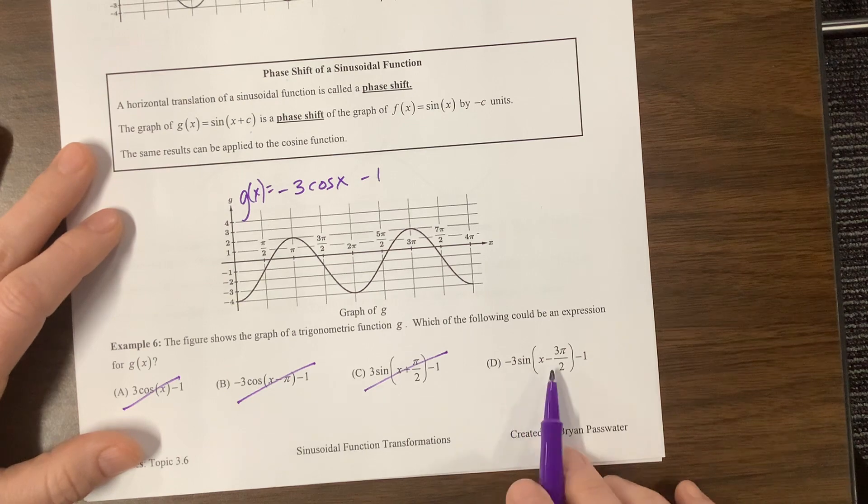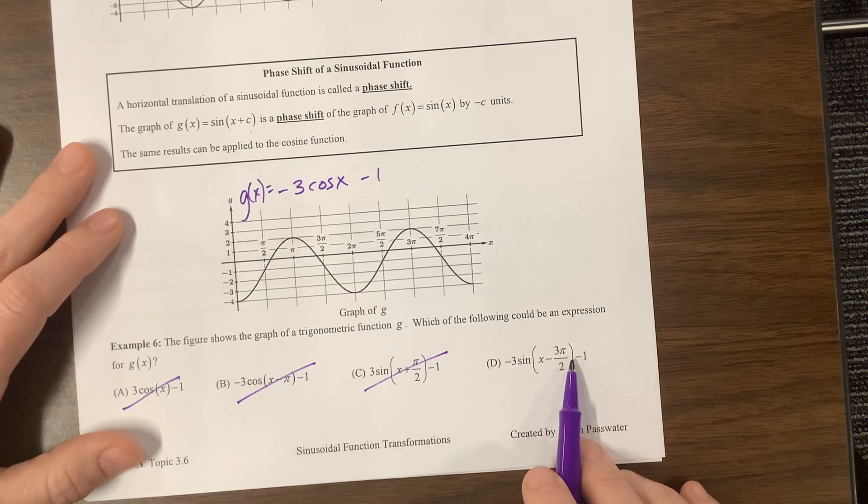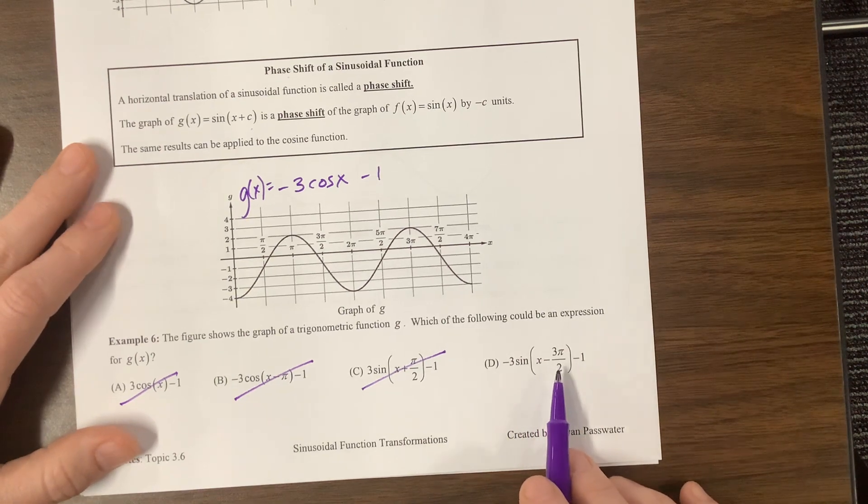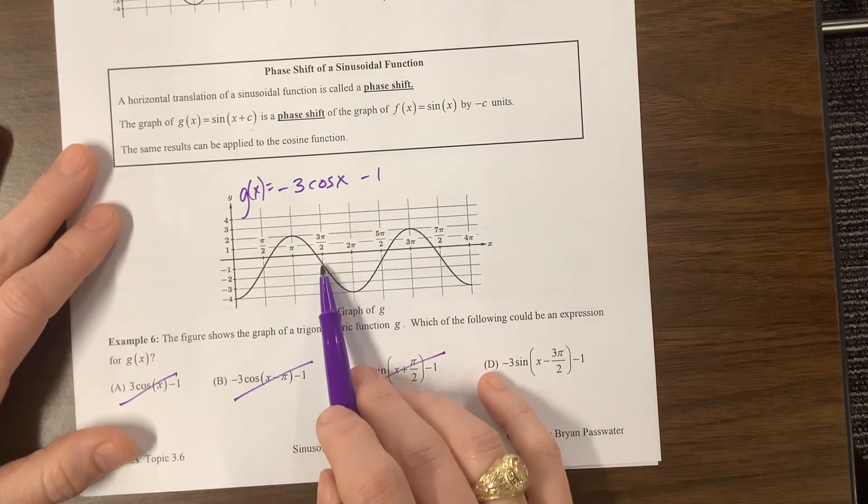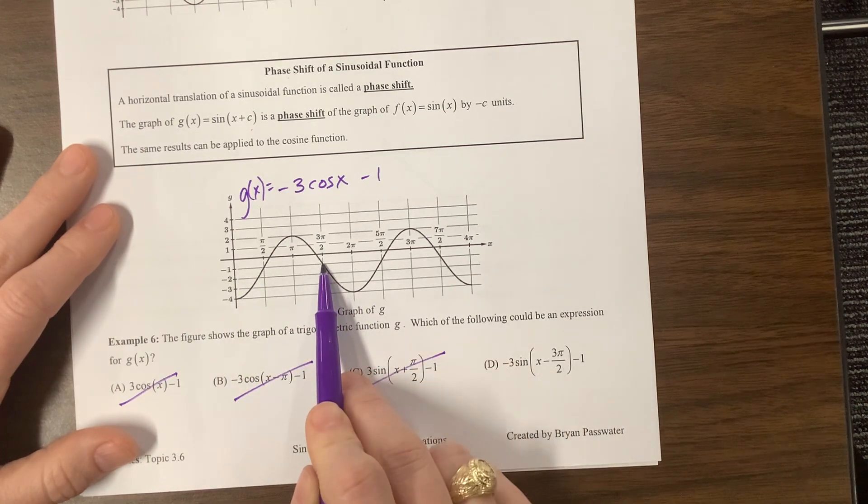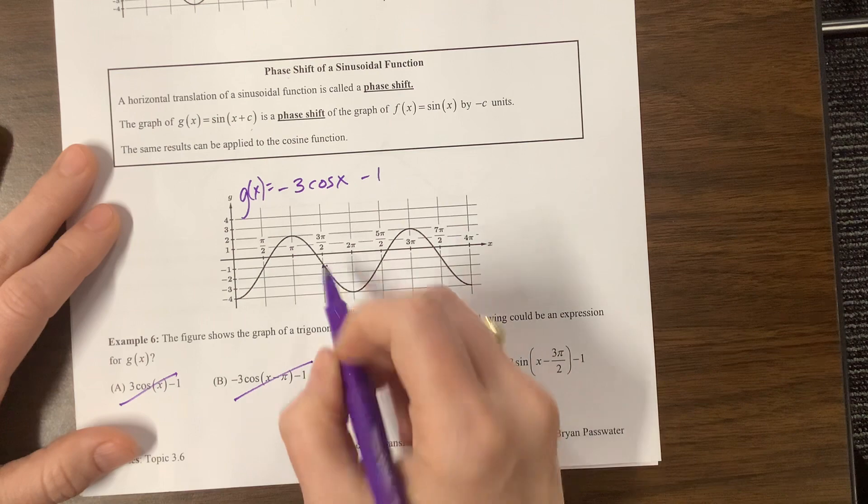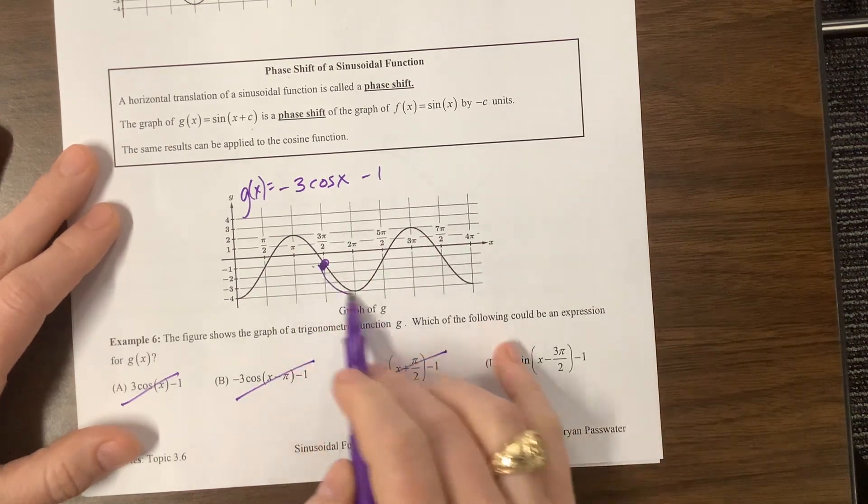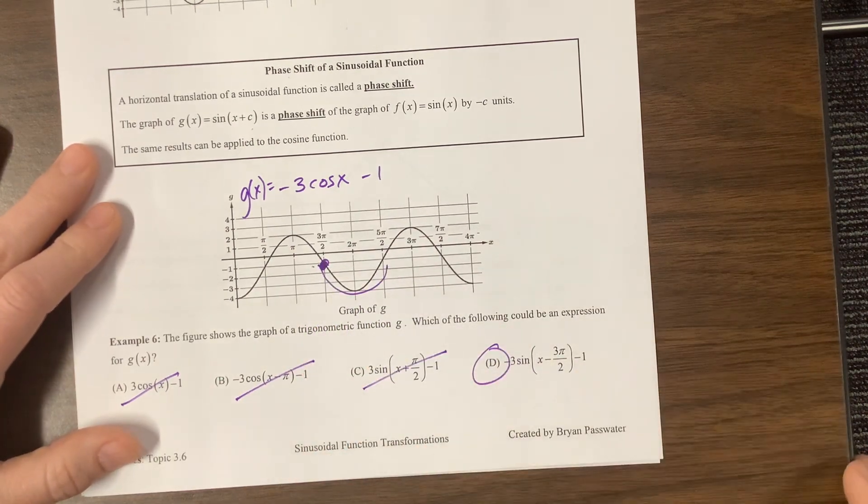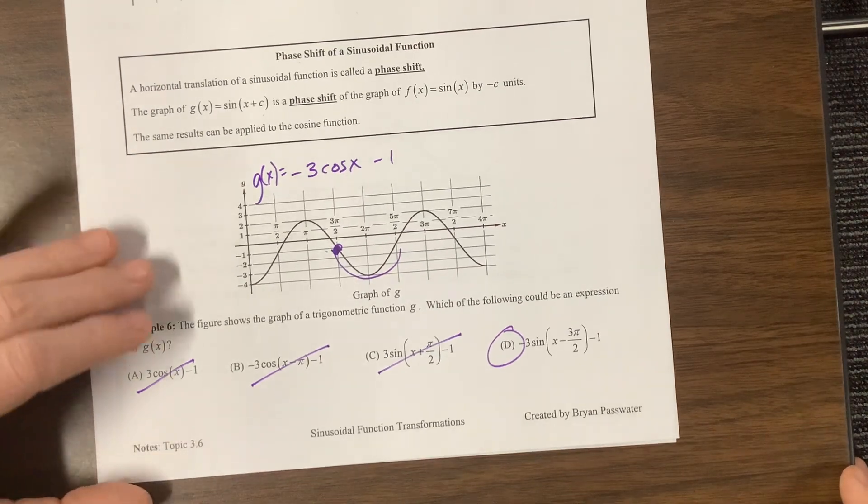This one is saying we shift to the right 3 pi over 2. So we shift to the right 3 pi over 2. That's here, and then we went down 1. So this is giving us that point, and the negative tells me we go down first, which we do. So the best answer to that problem is D.